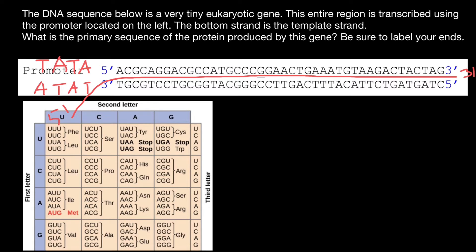Let me add the arrow here. Now we are looking for ATG, which codes for the start of translation. Here's ATG in the sequence — let me circle it. This first codon not only specifies the start of translation, but also specifies one of the 20 amino acids, which is methionine. So our first amino acid is going to be methionine.